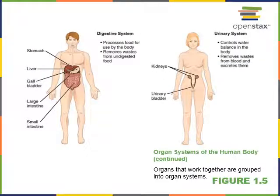The digestive system organs include the oral cavity, salivary glands, pharynx, esophagus, stomach, small intestine, liver, gallbladder, pancreas, and large intestine. The primary function is to ingest food, break it down, absorb nutrients, and eliminate waste from the body. The urinary system organs include the kidneys, ureters, urinary bladder, and urethra. The functions are to filter blood and produce urine; the kidneys regulate blood composition and eliminate waste, excess water, or excess nutrients in the urine.